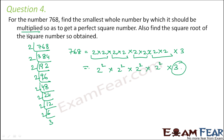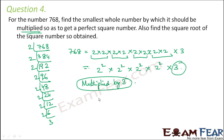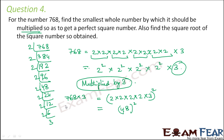So the number by which it should be multiplied is 3. If we multiply by 3, then 3 also becomes 3 square, making it a perfect square. Therefore it should be multiplied by 3. When you multiply 768 by 3, it becomes 2 into 2 into 2 into 2 into 2 into 3 square, which equals 48 squared. So 48 whole square equals 768 into 3, which equals 2304. Therefore square root of 2304 equals 48.